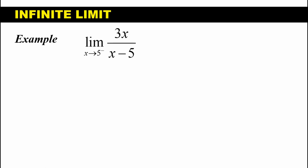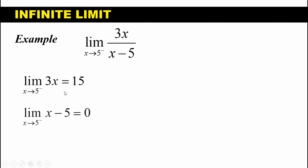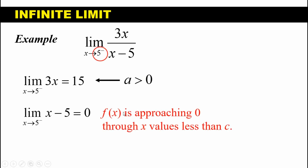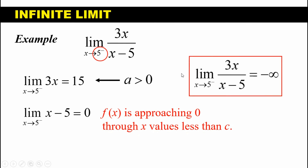Let's have an example: the limit of 3x over (x minus 5) as x approaches 5 from the left. Solving for the limit of the numerator by substitution, we get 15 — since 3 times 5 is 15. For the denominator, the limit of (x minus 5) as x approaches 5 from the left is 0, since 5 minus 5 equals 0. Since the numerator's limit is greater than 0 and we are approaching through x values less than c, the limit is negative infinity — positive divided by negative gives negative infinity.